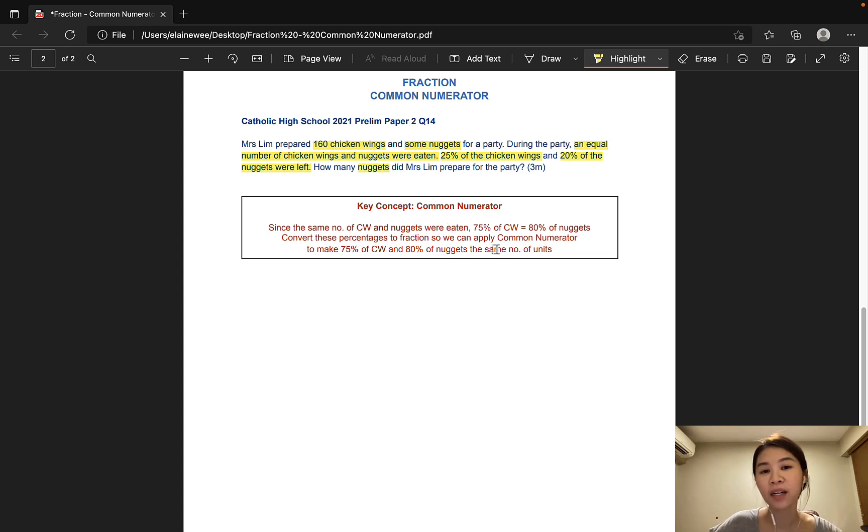Now, the key words of this question are, an equal number of chicken wings and nuggets were eaten. That would mean that the fraction of the chicken wings eaten and the fraction of the nuggets eaten are the same. Since 25% of the chicken wings and 20% of the nuggets were left, that would mean 75% of the chicken wings and 80% of the nuggets were eaten. You must be thinking, isn't this a percentage question? Well, yes and no. All we need to do is to convert these percentages here to fraction, so we can easily apply common numerator to solve this question.